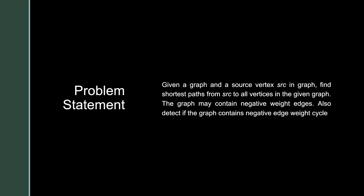This is the problem statement. Given a graph and a source vertex in that graph, find the shortest path from that source to all the vertices in the given graph. The graph may contain negative weight edges. We also have to detect if the graph contains a negative edge weight cycle.